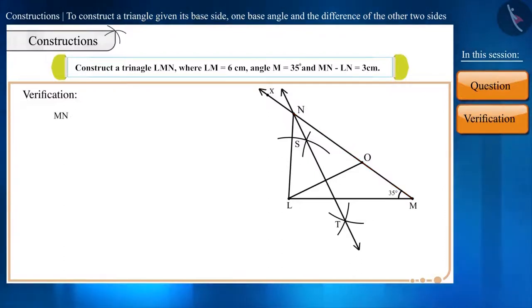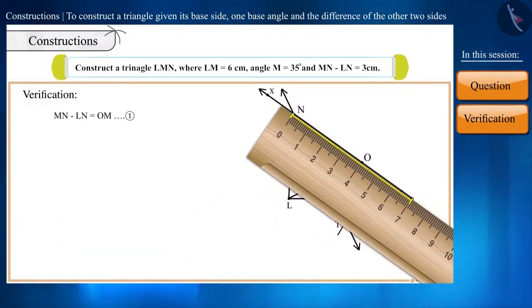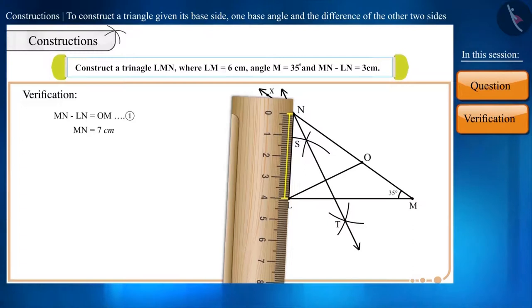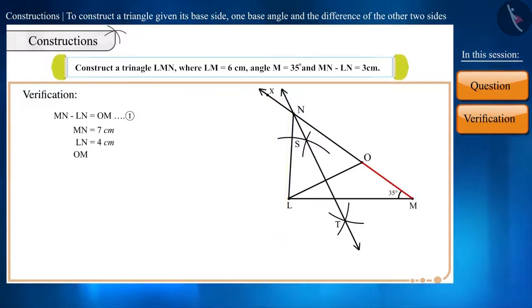For verification, MN minus LN is equal to OM. Let's call it equation 1. Let's take the measure of side MN. The length of MN is 7 cm. Now let's take the measure of LN, which is 4 cm. We have taken the length of side OM as 3 cm. On subtracting the values, our construction gets verified.